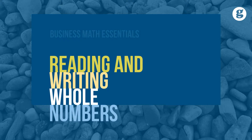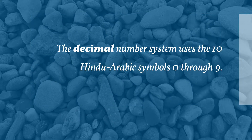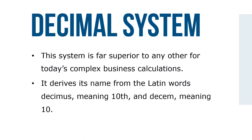The number system most widely used in the world today is known as the Hindu-Arabic numerical system or decimal number system. The decimal number system uses the ten Hindu-Arabic symbols 0 through 9. In this place value system, the position of a digit to the left or right of the decimal point affects its value. This system is far superior to any other for today's complex business calculations. It derives its name from the Latin word decimus meaning tenth and decim meaning ten.